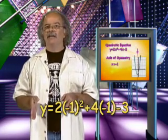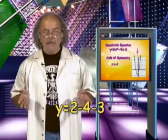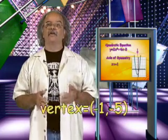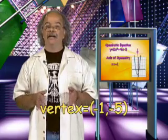Remember, negative 1 squared is positive 1. And we find that when x equals negative 1, y equals negative 5. Therefore, our vertex is the point negative 1, negative 5.